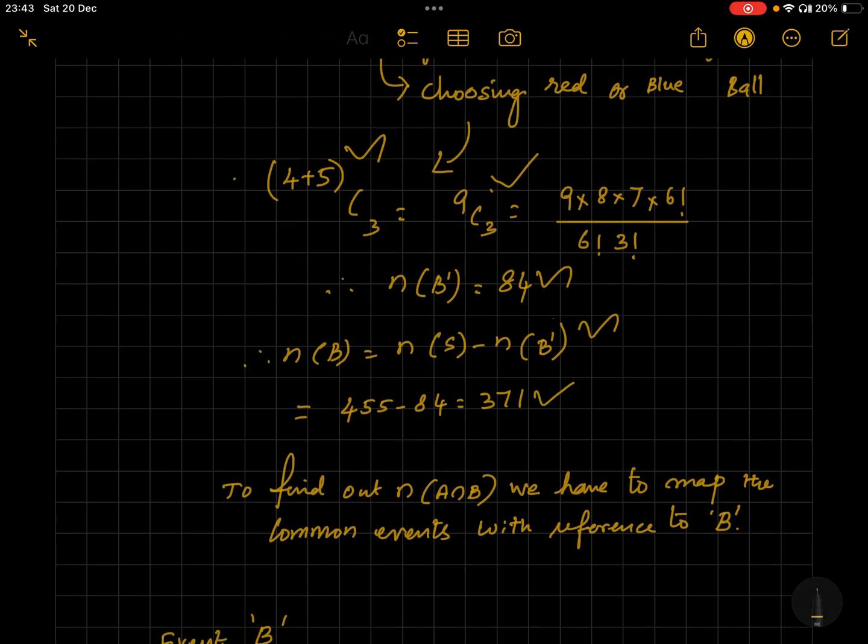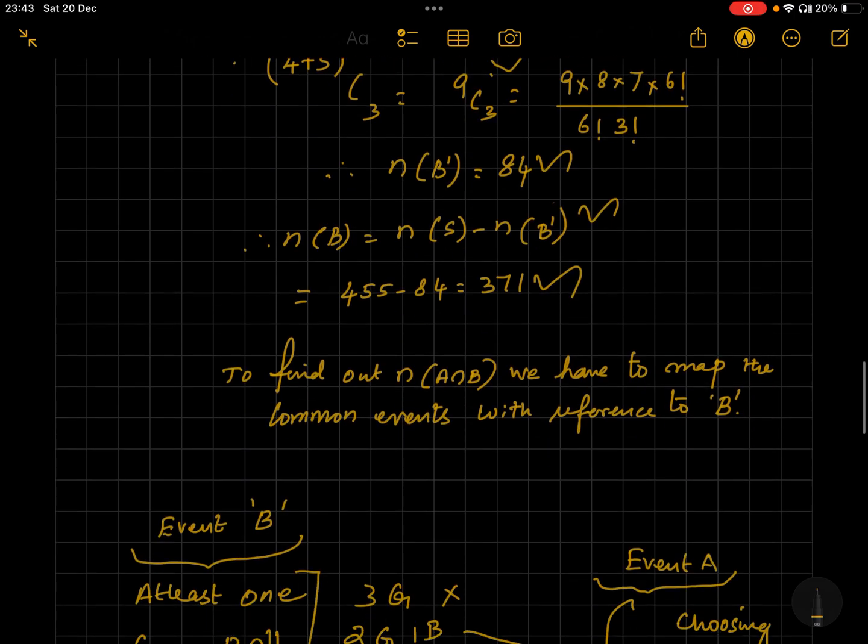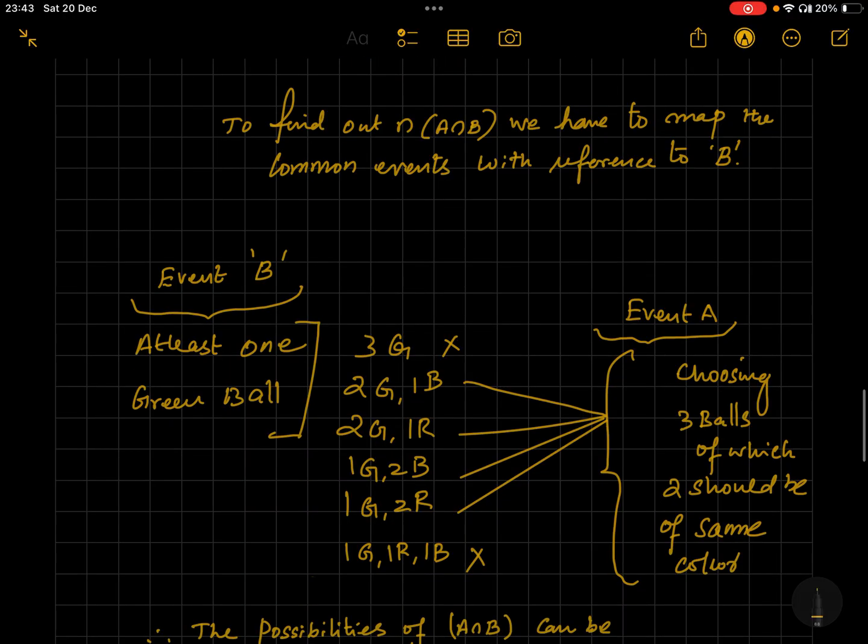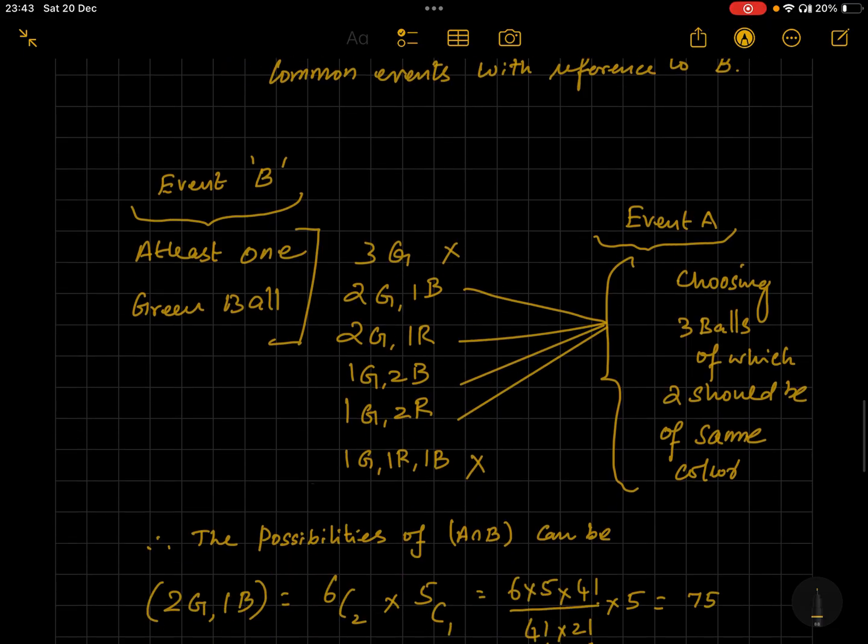It is 9C3 ways we can do. Therefore n(B') is 84. n(B) is equal to n(S) minus n(B'), which is equal to 455 minus 84, which is equal to 371. Now let's find out n(A∩B). You have to map the common events with reference to B. At least one green ball is the condition of event B, so only rest can be chosen. It can be three green balls, two green balls one blue ball, two green one red, one green two blue, one green two red, one green one red and one blue.